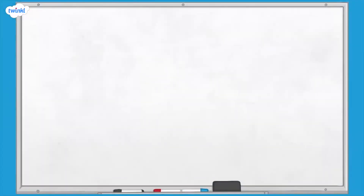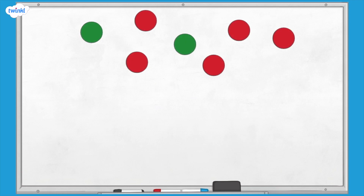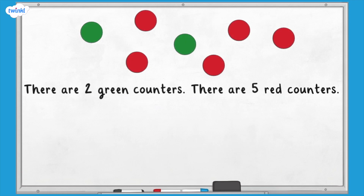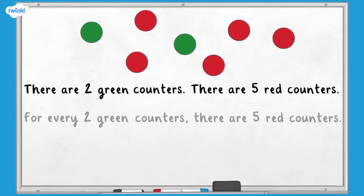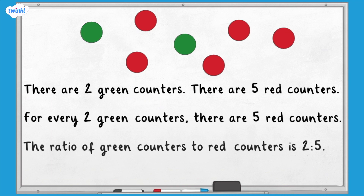Here we have some counters. There are two green counters and five red counters. For every two green counters, there are five red counters. So we can see that the ratio of green counters to red counters is two to five. We use a ratio symbol, which is a colon, to show this.